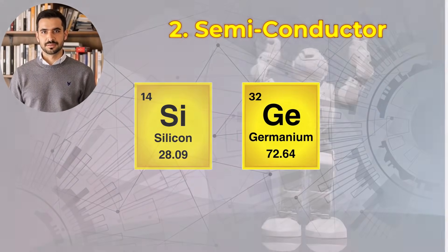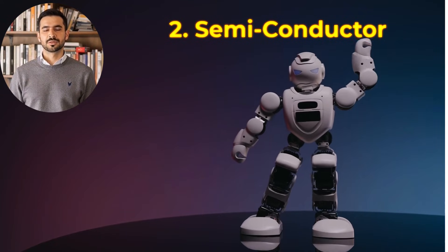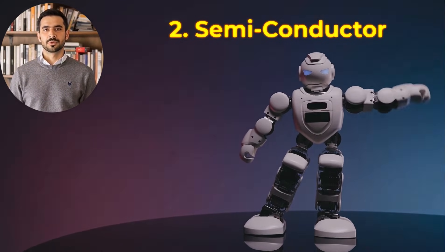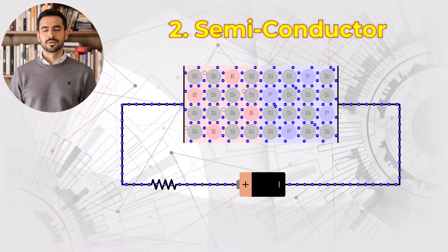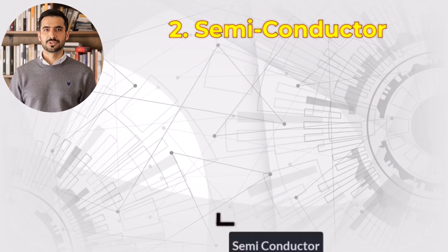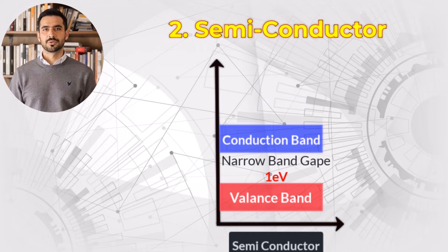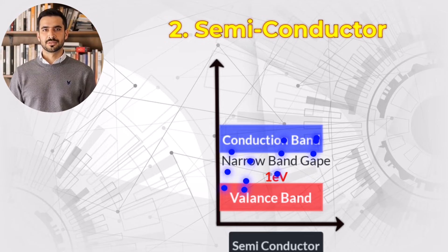Semiconductors are the backbone of modern technology. Their unique property is that they can act as both a conductor and an insulator, depending on the conditions. In energy terms, semiconductors have a small gap between the valence and conduction bands. With a little energy, electrons can jump the gap and conduct electricity.